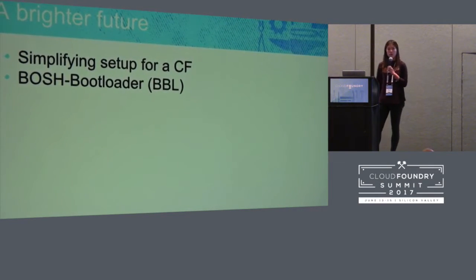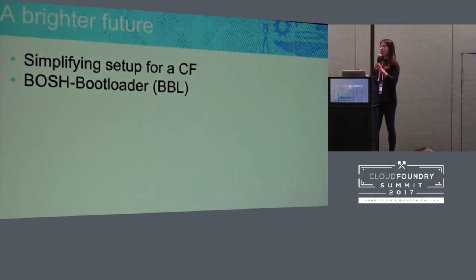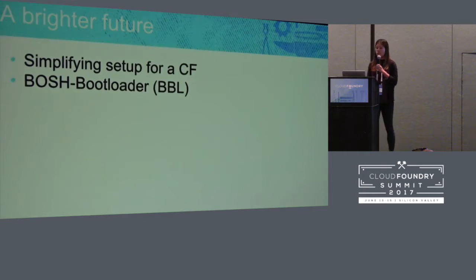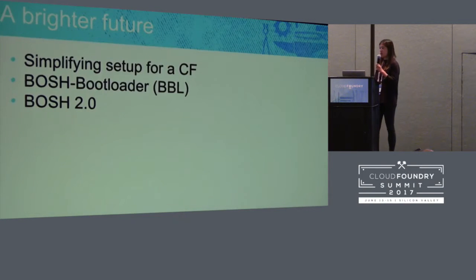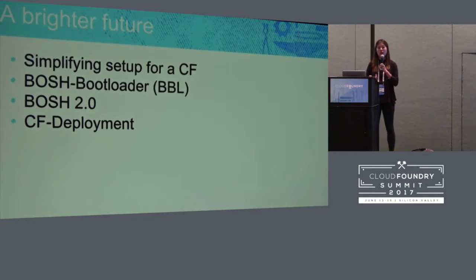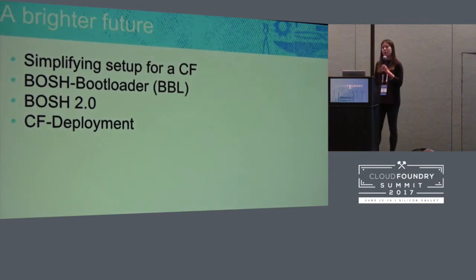The first tool is Bosch Bootloader, which we call Bubble for short. It will take you from essentially nothing to having not only a Bosch director, but the underlying infrastructure necessary to deploy your Cloud Foundry — your network, your subnets, that underlying CF infrastructure you need. Under the hood, Bubble is utilizing a lot of the new features from Bosch 2.0. Bubble is also incorporated with the third tool, CF deployment, which is the repository that houses the new base manifest for deploying a Cloud Foundry. By using these tools, you're now able to deploy CF in a way that's automatable, repeatable, and reproducible.